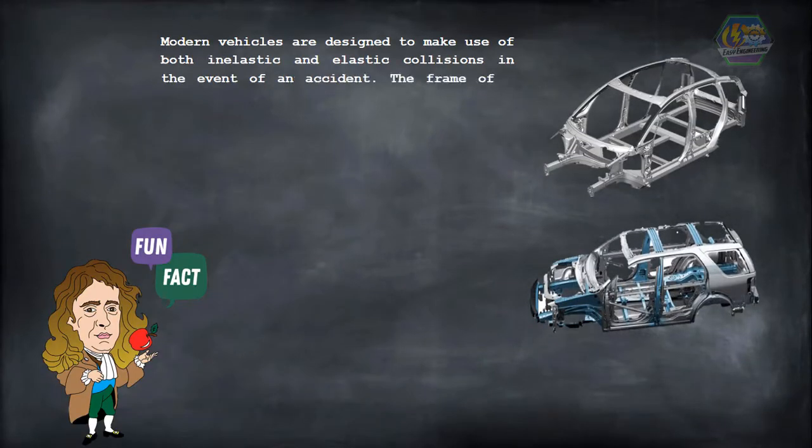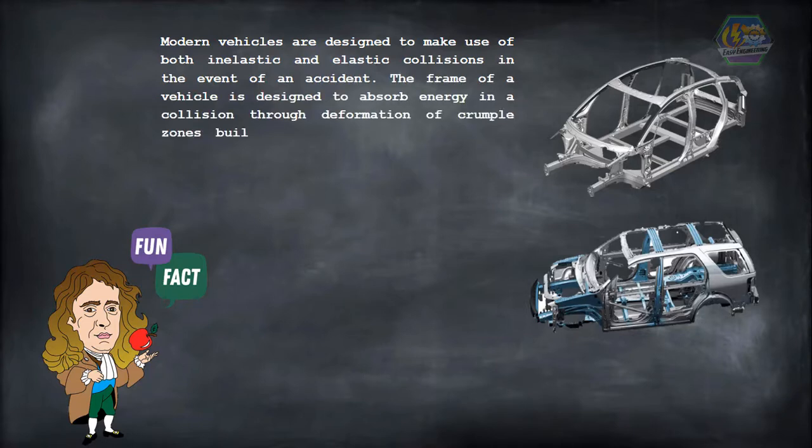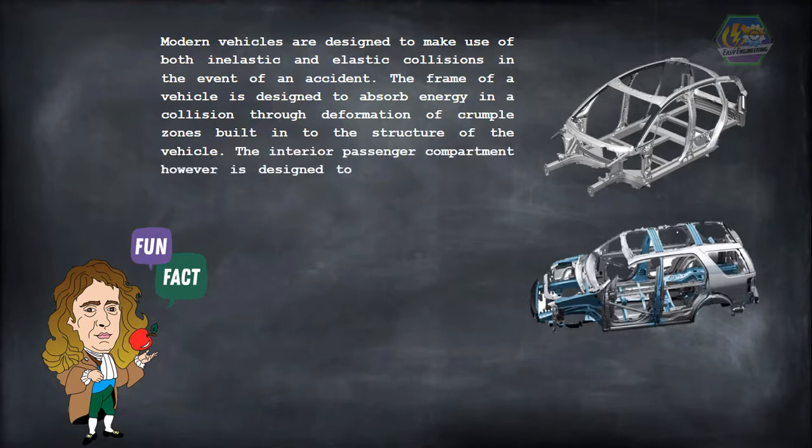Modern vehicles are designed to make use of both inelastic and elastic collisions in the event of an accident. The frame of a vehicle is designed to absorb energy in a collision through the formation of crumple zones built into the structure of the vehicle. The interior passenger compartment, however, is designed to be strong so that damage to the occupant is minimized.